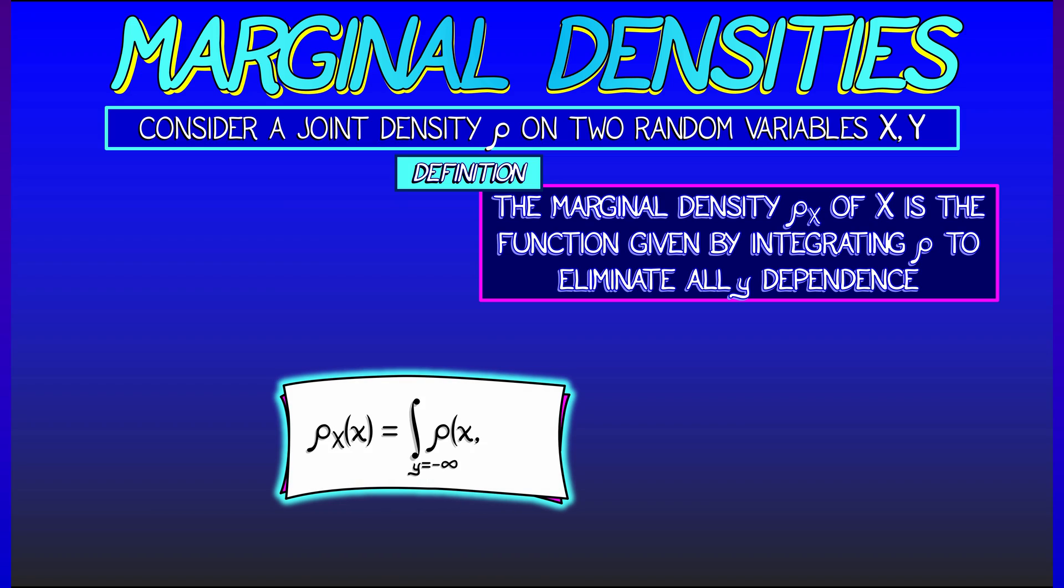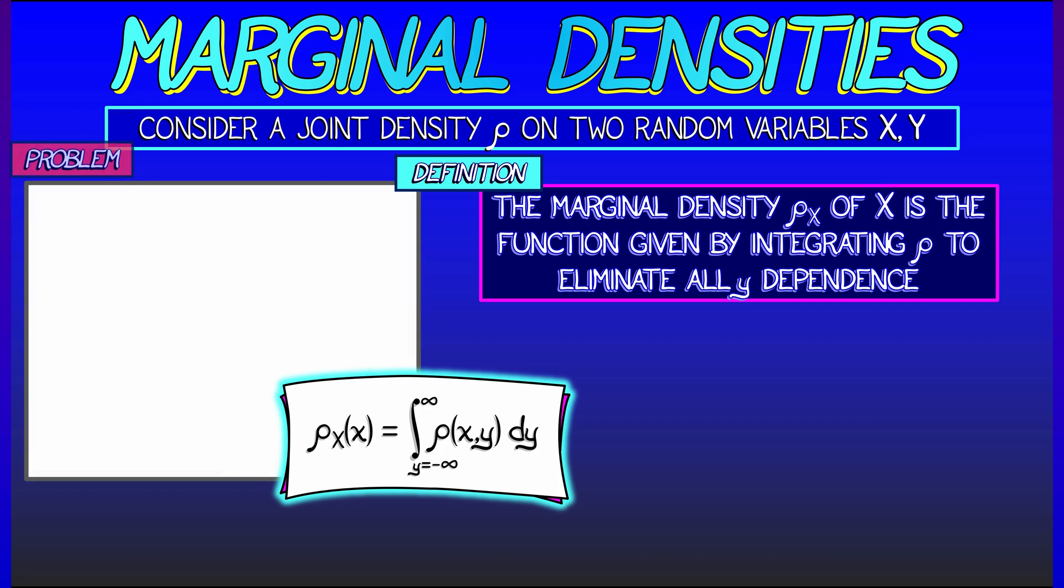That is, rho sub x is the integral of rho of xy dy, as y goes from negative infinity to positive infinity. Now, this is a probability density on x. Why? Think about it.